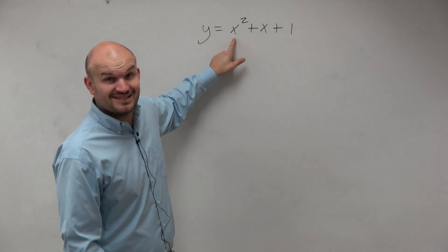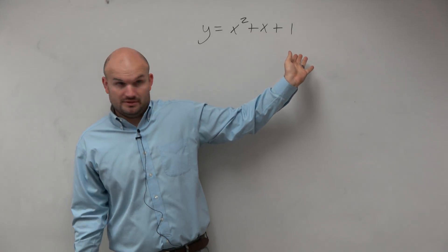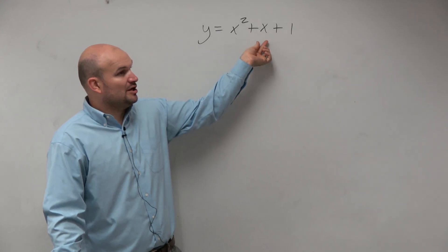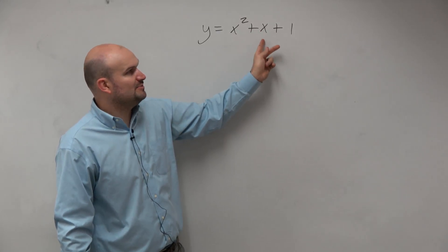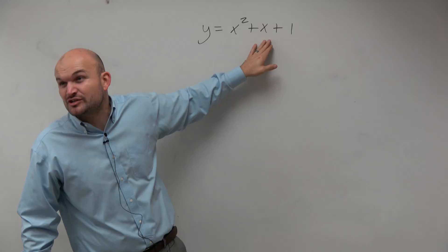First term squared? That's good. Last term squared? Yeah, 1 times 1 is 1 squared. Is the middle term the square root times square root times 2? x times 1 is x times 2 would be 2x. So no, this is not a perfect square trinomial, right?